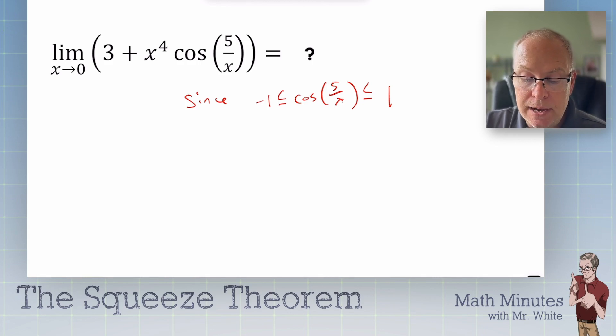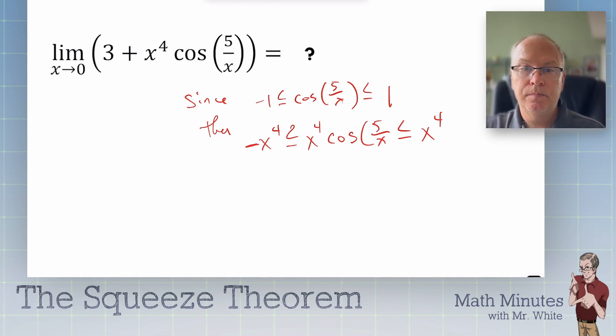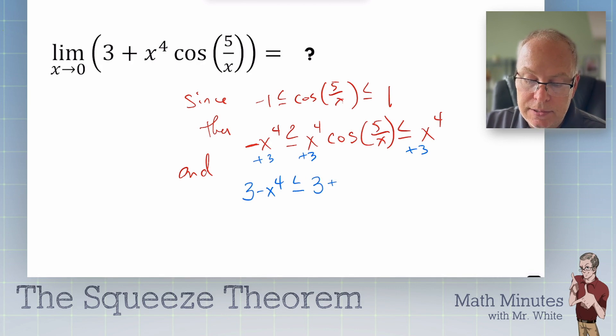We could multiply. Then, negative x to the 4th is less than, multiply all three sides by x to the 4th. Perfectly okay thing to do in algebra. I'm multiplying all three sides by x to the 4th, which is a number. So, I've still got a valid inequality. And we could now add 3 to each side. We could add 3, and 3 minus x to the 4th is less than or equal to 3 plus x to the 4th, cosine of 5 over x, less than or equal to 3 plus x to the 4th.